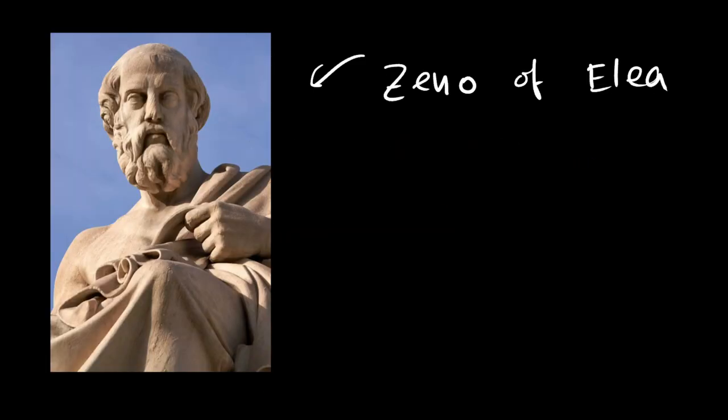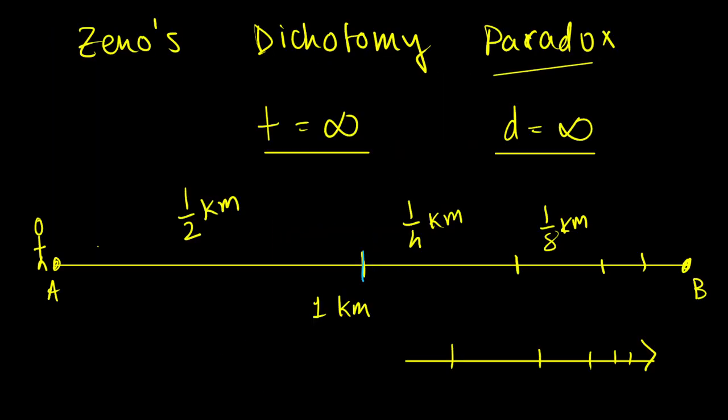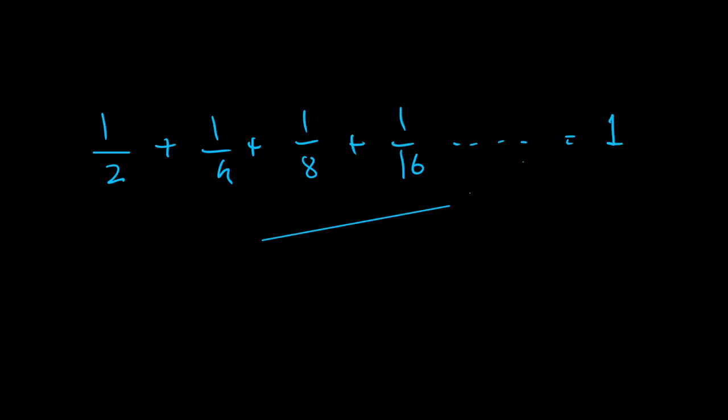That sometimes, sometimes, infinite sums have a finite result. And this is the representation of Zeno's paradox. This is the intuitive answer. Right? You half the distances. You half the distances. And if you add them up, it will result in one.